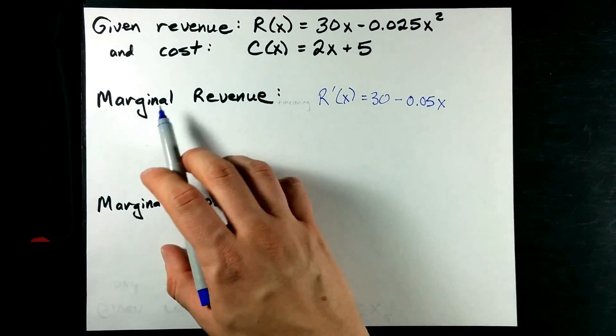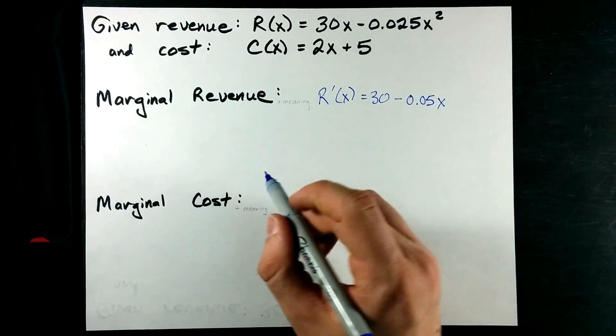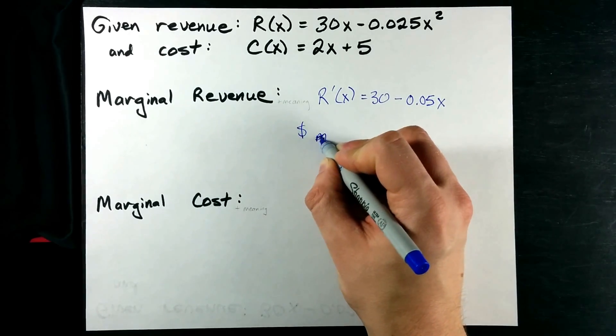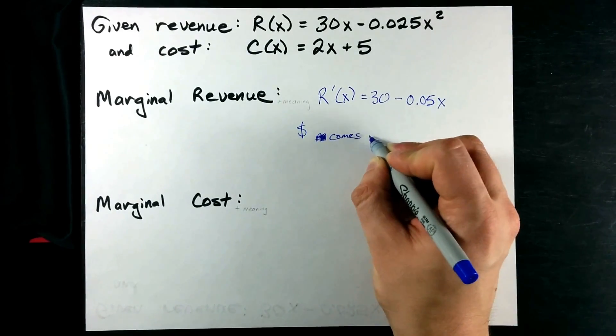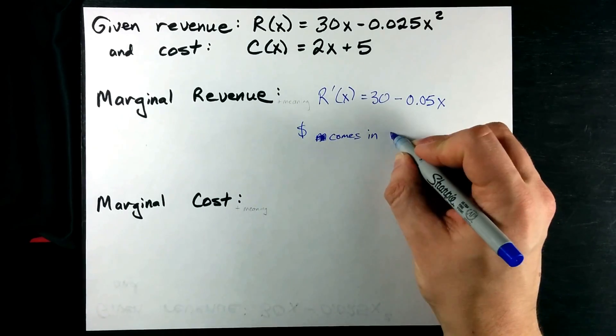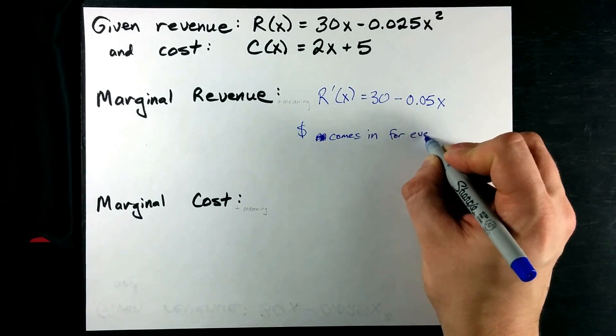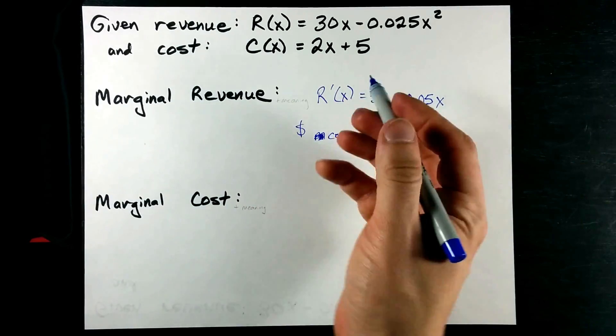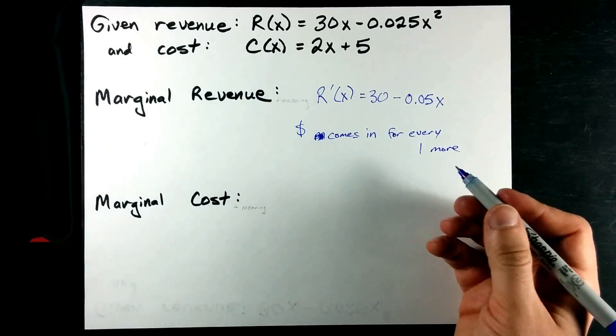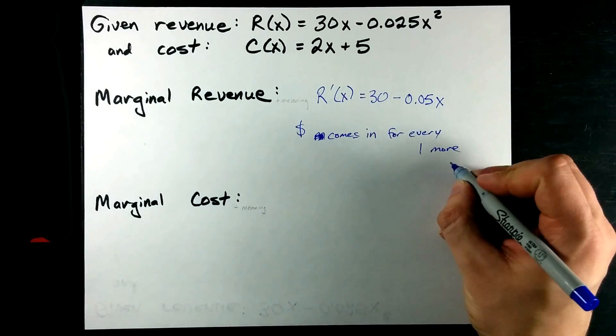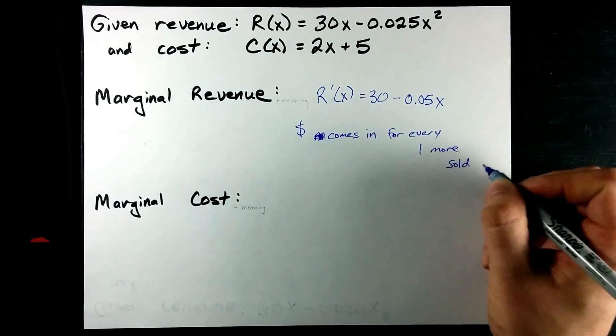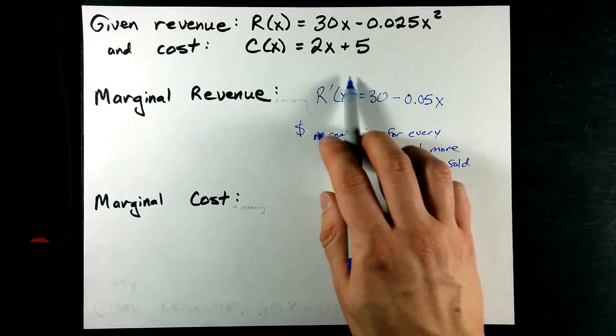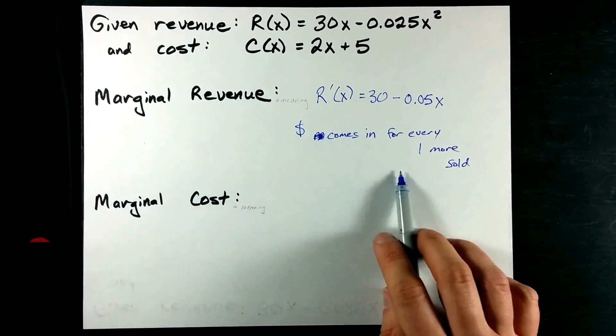If you're wondering what marginal revenue is, it's the amount of money made, or amount of money that comes in extra for every one more unit that you, well, whatever x is. If x is sold, it's sold. If x is made, it's made. I'm going to assume it's sold. For every extra one that you sell, you're supposed to make this amount of money on that one.